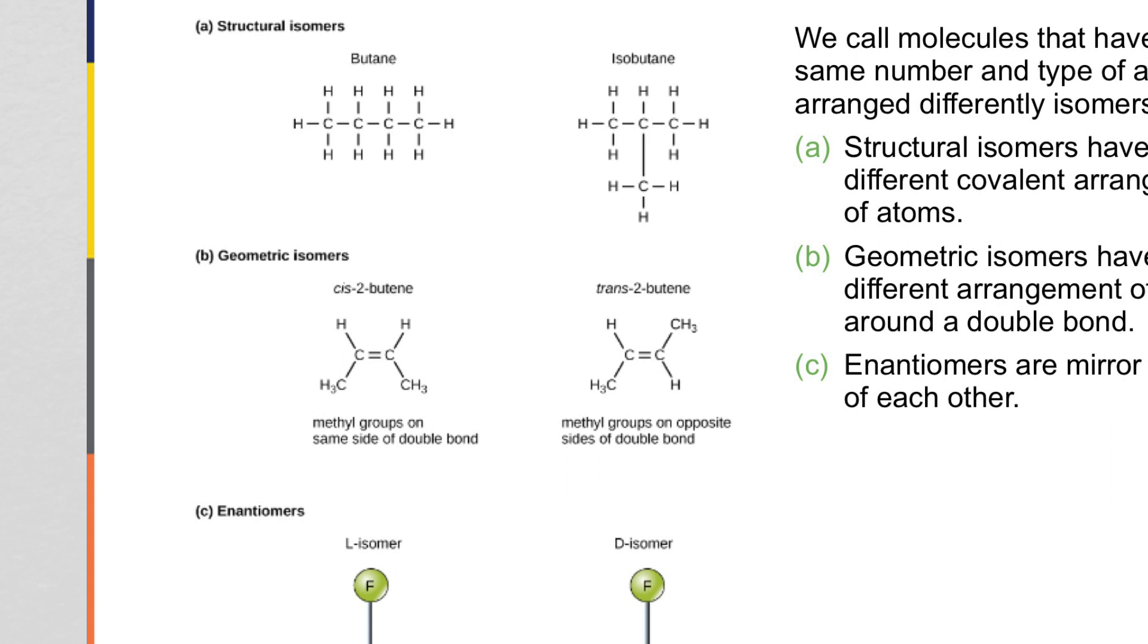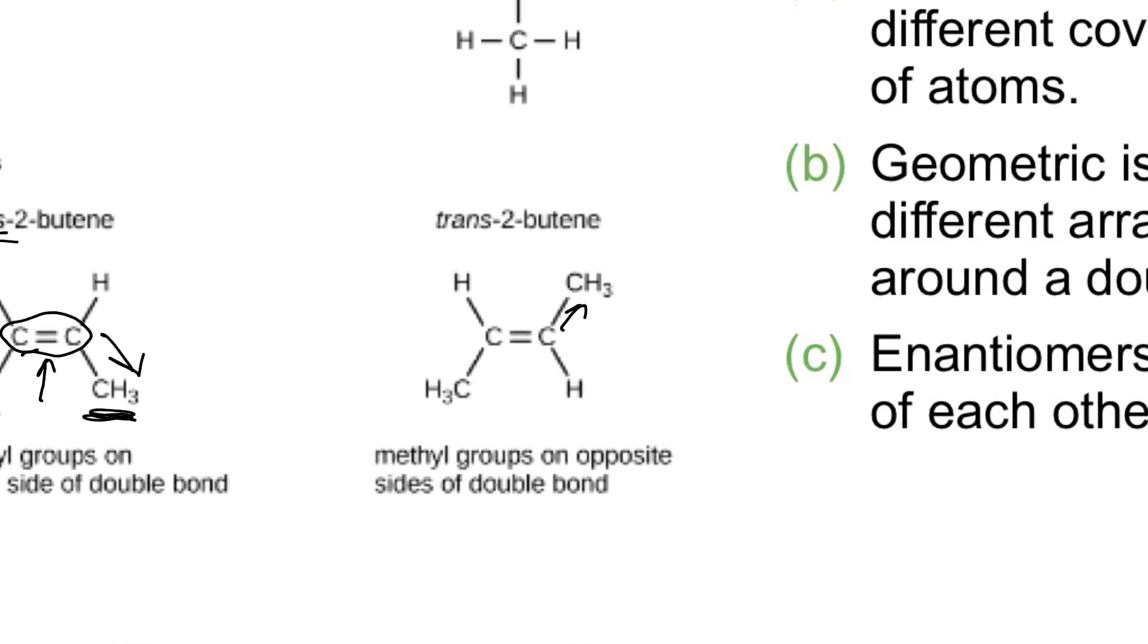So when you have a double bond, they're not flexible and they can't spin. And so these two carbons are locked in place. These methyl groups, CH3 is a methyl group. If they're both pointing the same direction, we say that this is the cis conformation of the molecule. If the methyl groups are pointing opposite directions, like you see over here, then we say that's the trans conformation.